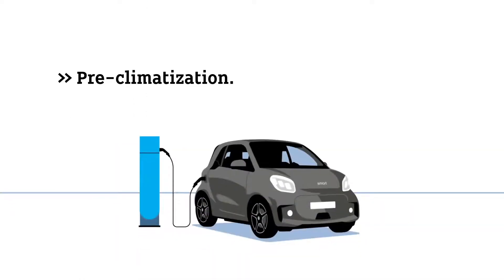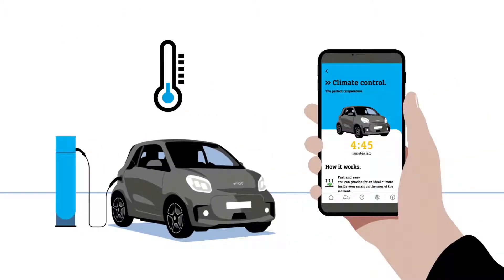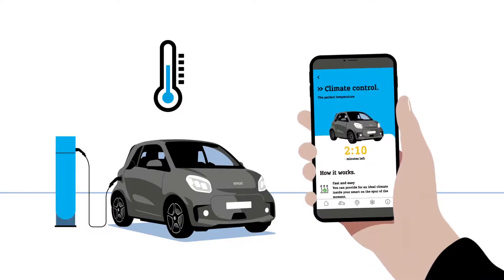On hot or cold days, you're able to optimize your range with the pre-climatization feature. While your smart charges, you can climatize it via app for a pleasant temperature before you get in.